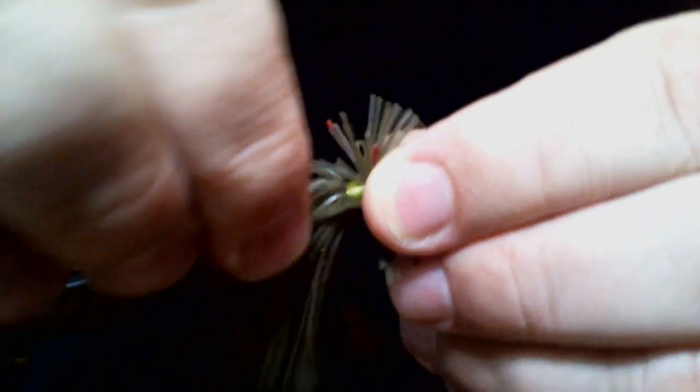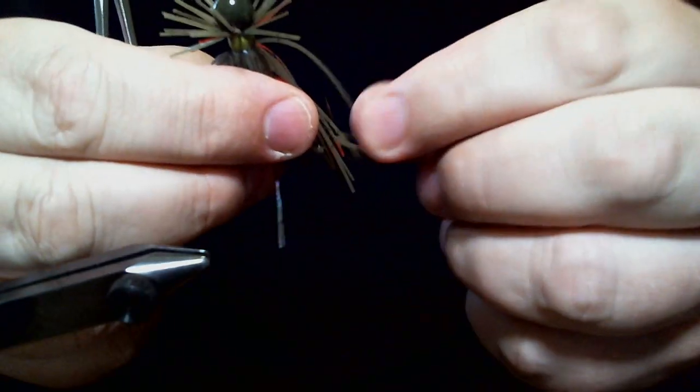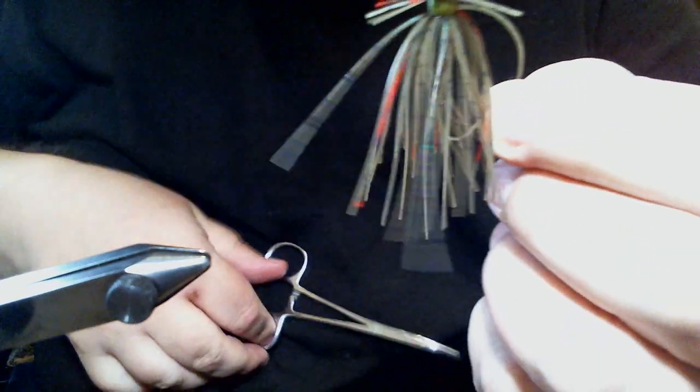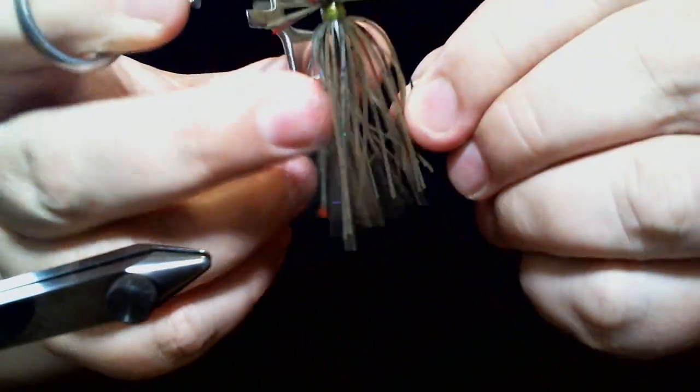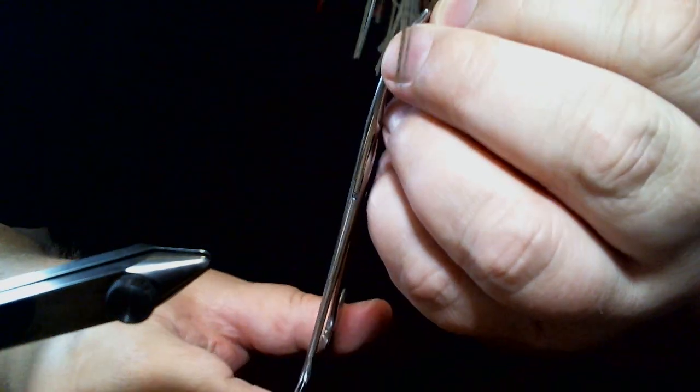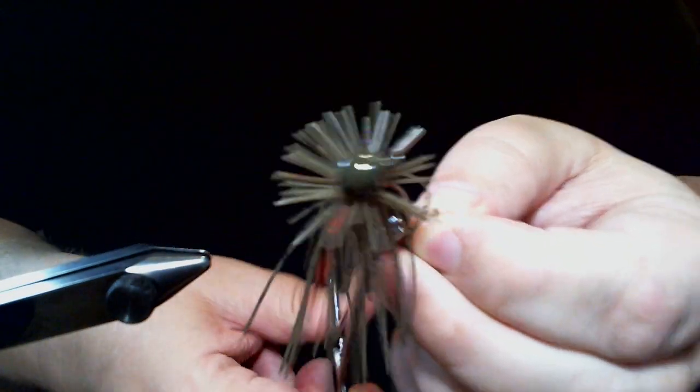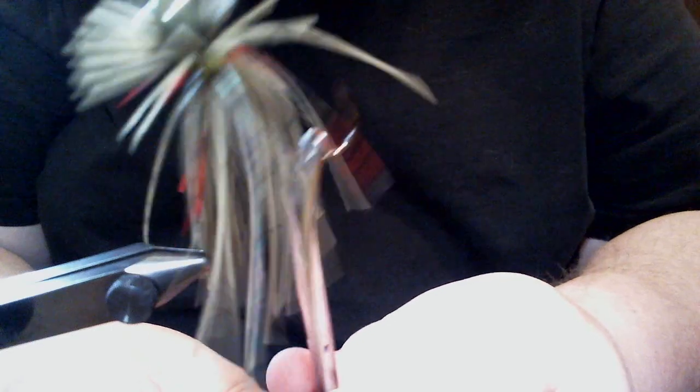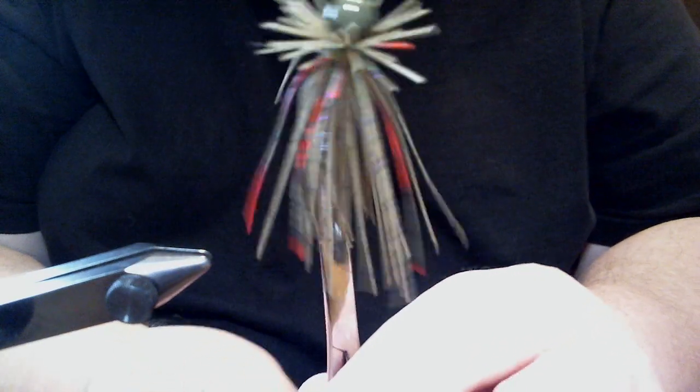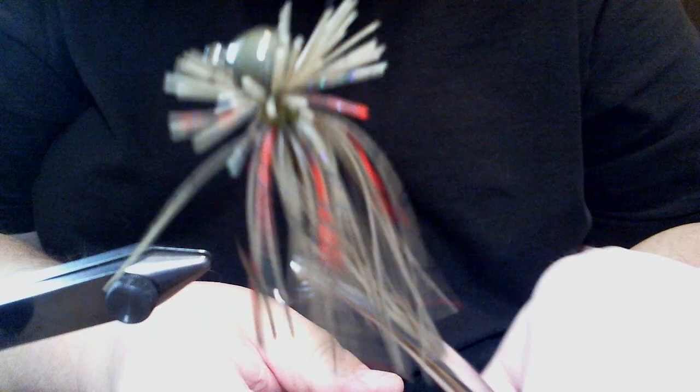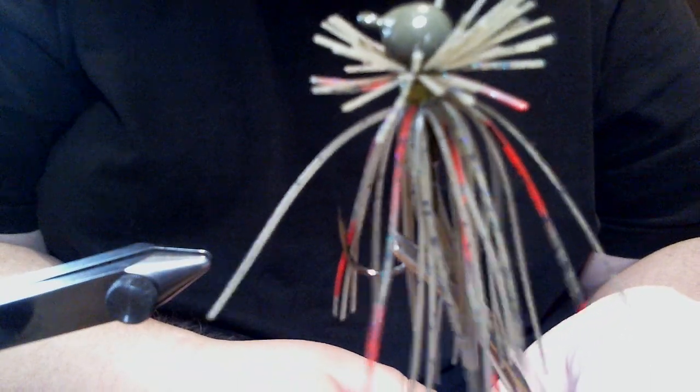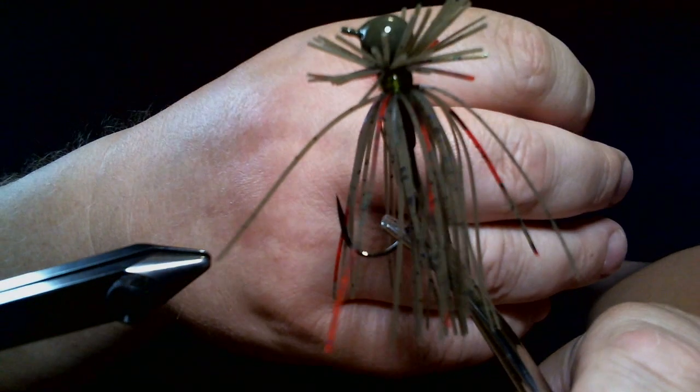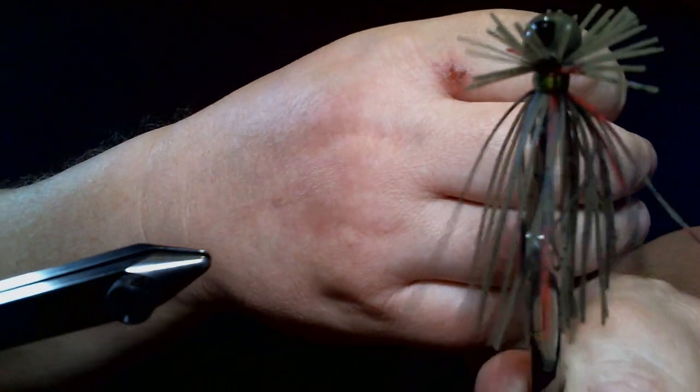Just four strands of a color, how it really shows up and really changes the look of this jig. Just plain green pumpkin, four strands of that green pumpkin candy and four strands of the green pumpkin candy red. It completely changes that. Takes it from just a regular green pumpkin jig. Now it pops.